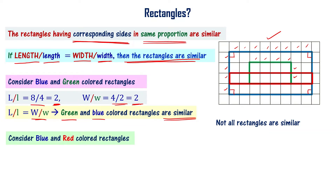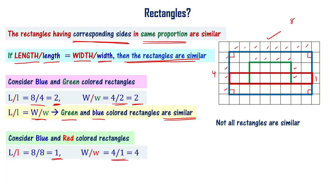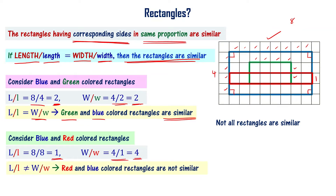Now consider the blue and red colored rectangles. The blue rectangle has length 8 units and width 4 units. The red rectangle has length 8 units and width 1 unit. Length by length is 8 by 8, which equals 1. Width by width is 4 by 1, which equals 4. The corresponding sides ratios are not equal, so the corresponding sides are not in the same proportion. Therefore, the red and blue rectangles are not similar.